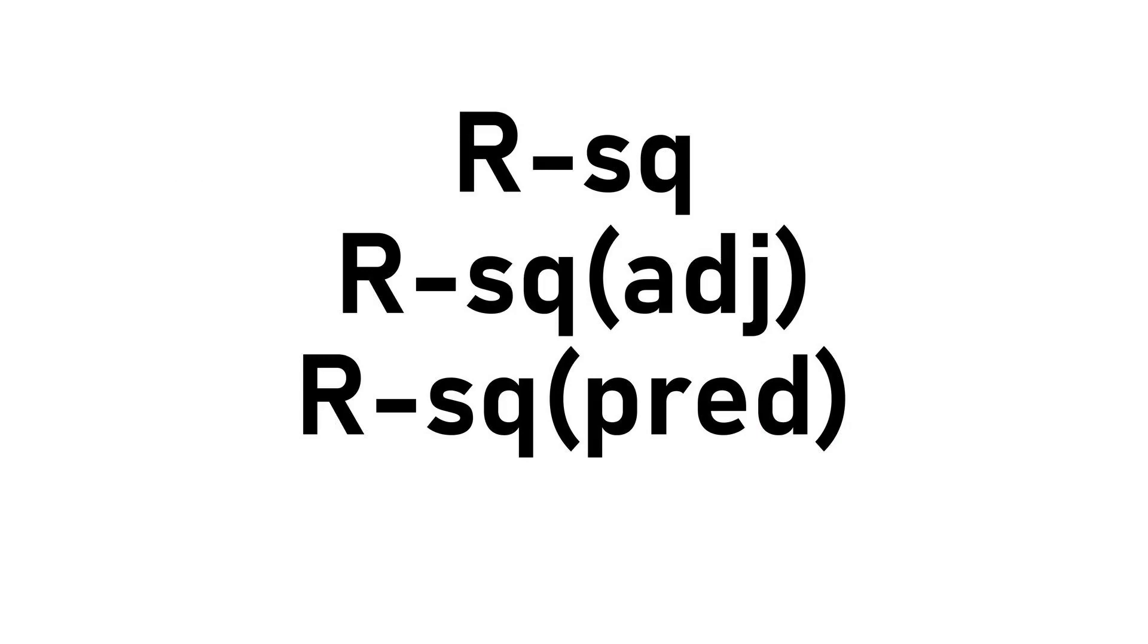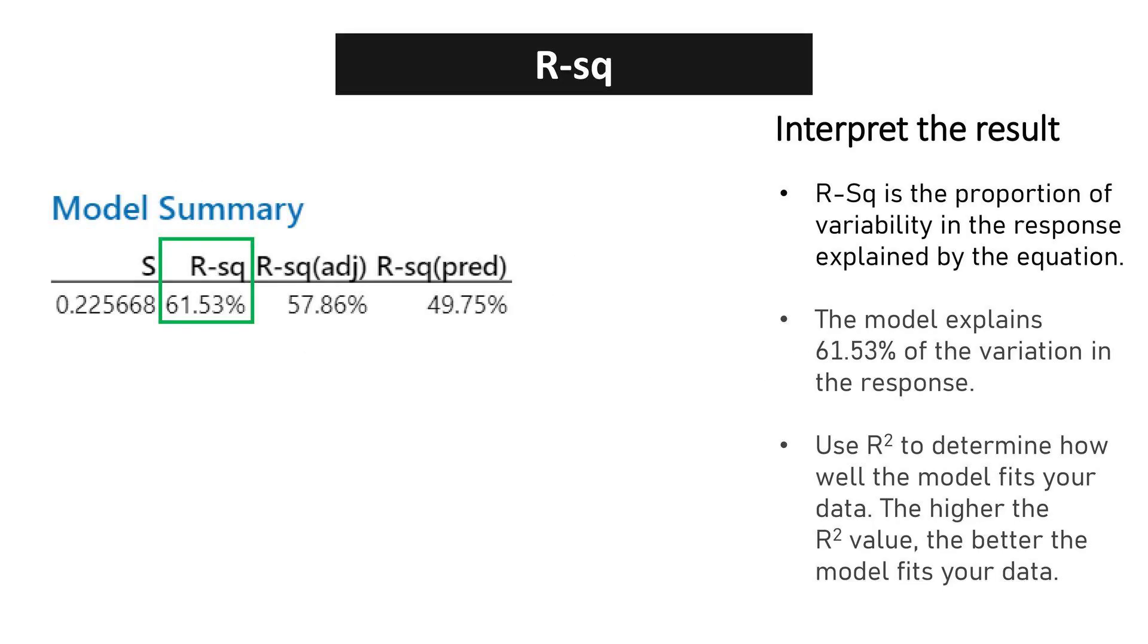R-squared, R-squared adjusted and R-squared predicted. An R-squared value of 61.53% not only quantifies model fit but also reassures that the chosen factors significantly explain the variability. Use R-squared to determine how well the model fits your data. The higher the R-squared value, the better the model fits your data.